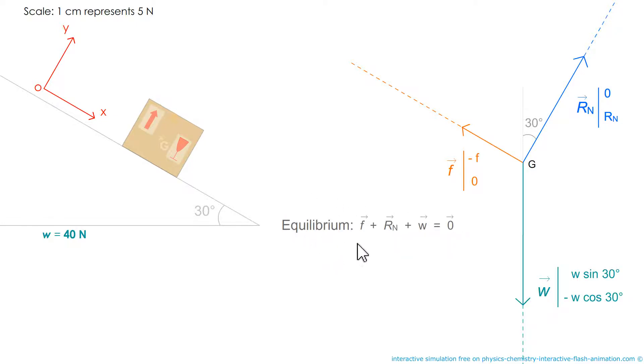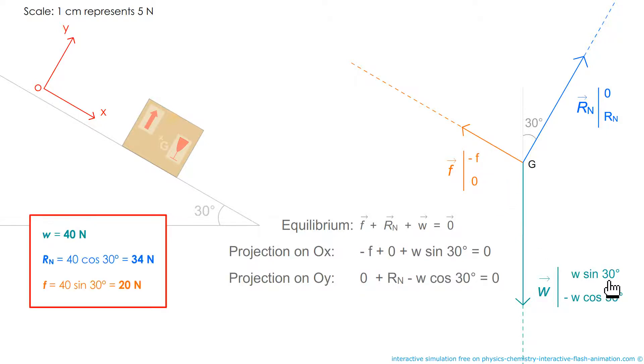The sum of the forces is zero. So the sum of the projections on OX is zero. The same for OY. It tells us that F equals W times the sine of 30 degrees. Rn equals W times the cosine of 30 degrees. And here is the result with this technique.